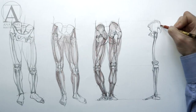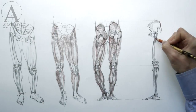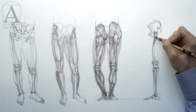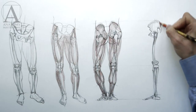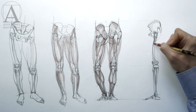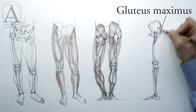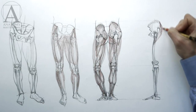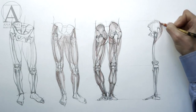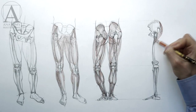The buttocks muscle, which is called the gluteus maximus, starts from the back edge of the pelvis and inserts into the upper part of the thigh bone. This muscle is part of the gluteal group, which consists of three muscles. The gluteus maximus is the most powerful of the three muscles. It moves the thigh backward and also assists in rotating the upper leg outward.